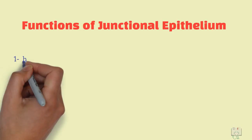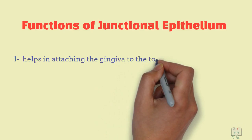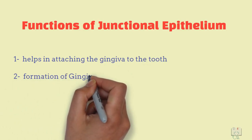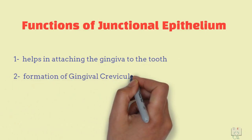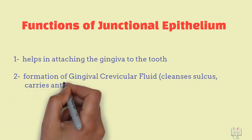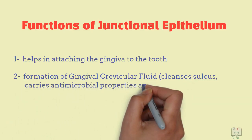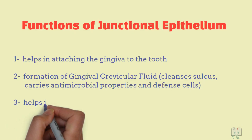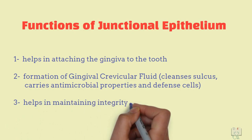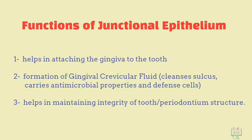The junctional epithelium helps in attaching the gingiva to the tooth and makes a barrier, but it allows formation of gingival crevicular fluid which cleanses the gingival sulcus and also has antimicrobial properties. Thus, it helps in maintaining the integrity of the tooth and periodontium.